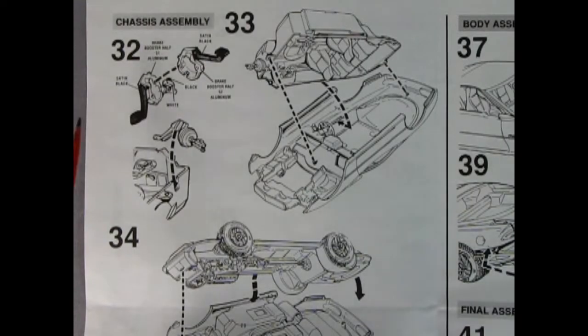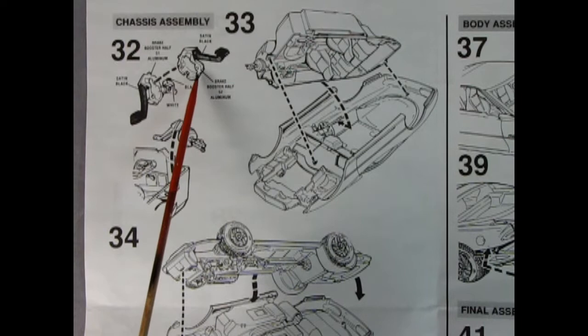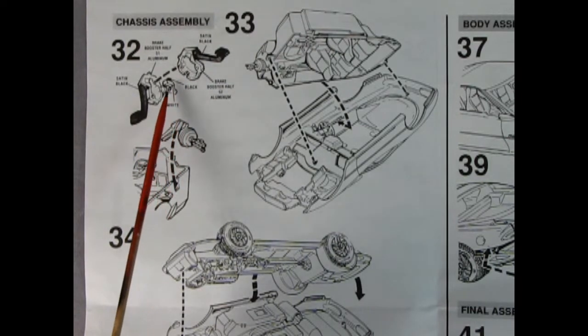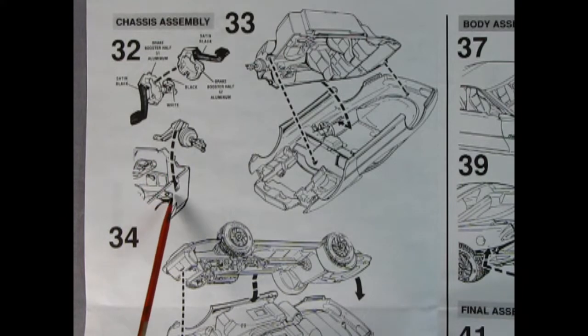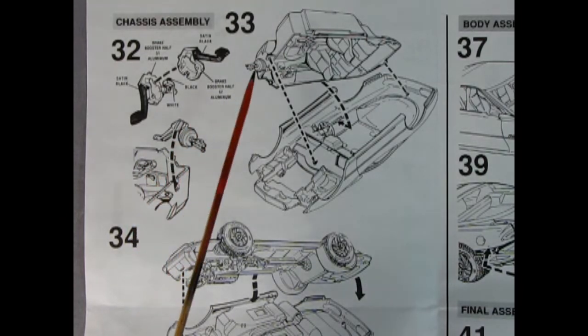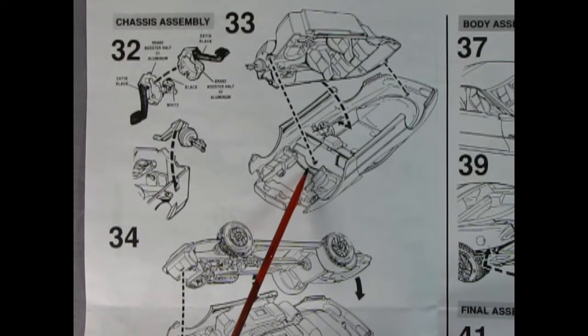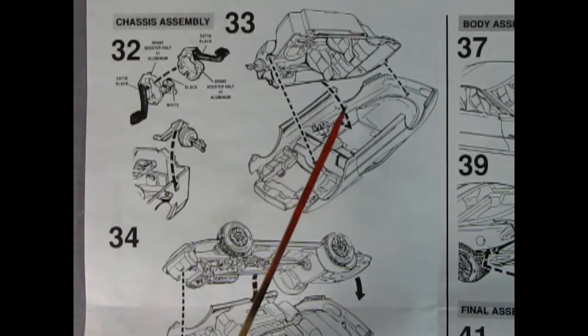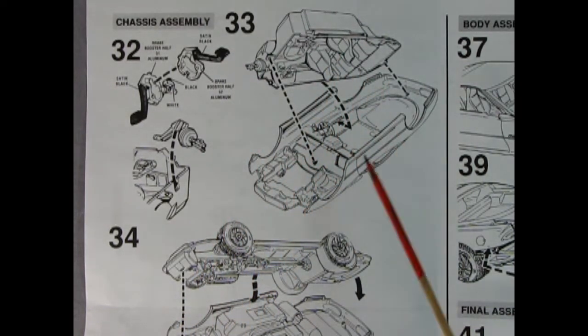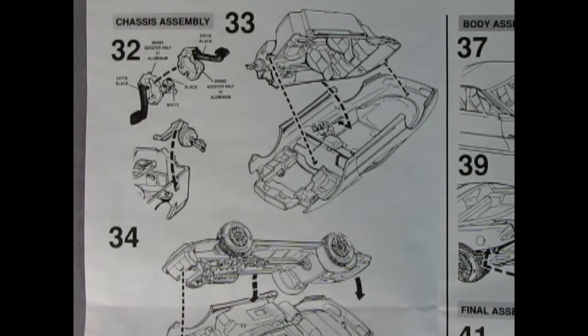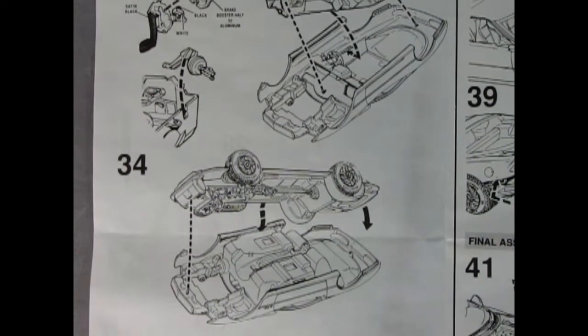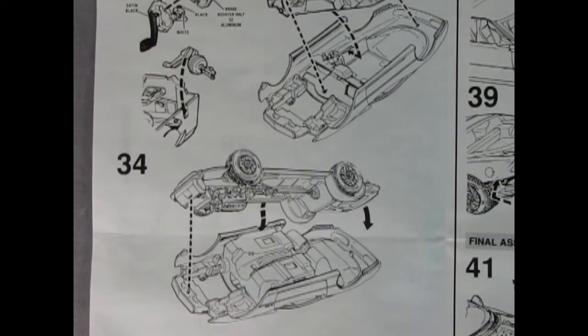Here we have the chassis assembly and what we have is right and left hand sides of the brake booster. Once you glue those together that drops into this notch into the interior bucket which then gets turned upside down and hooked up into the body. There's two little peg pins that go on there so that's how that goes. And then in panel 34 we see the chassis being dropped into the body shell.